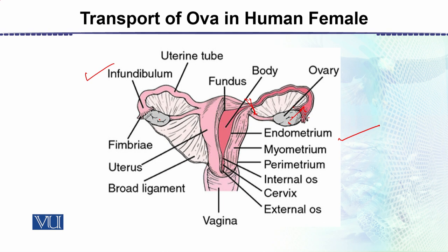The endometrium is the innermost lining which is usually sloughed off and removed from the body monthly. After that comes the cervix and then the external os, which is the outer opening of the uterus.